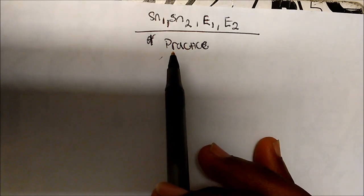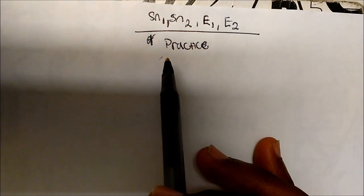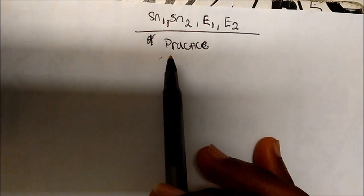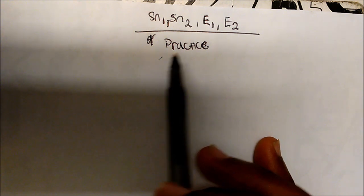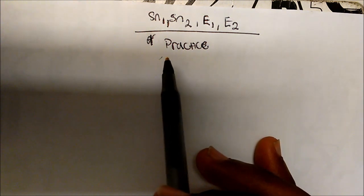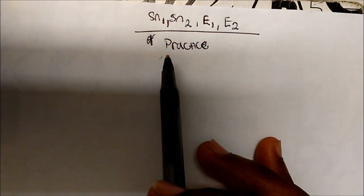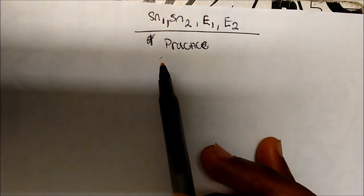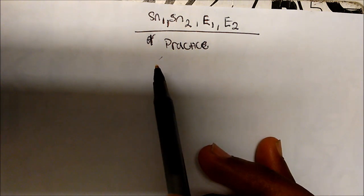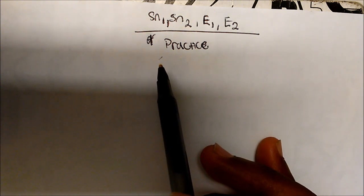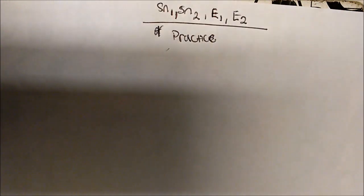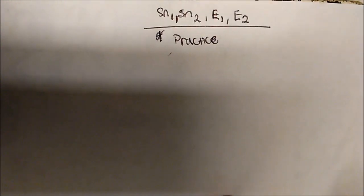In this video, based on the knowledge we have accumulated so far, we want to go ahead and practice this stuff, because practice makes perfect. We're going to go through a series of examples and try to eliminate and come up with the best possible substitution or elimination pattern that these reactions will go through. So let's get it started. What about this molecule?